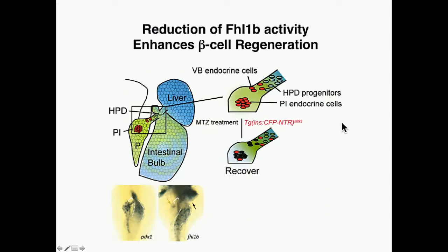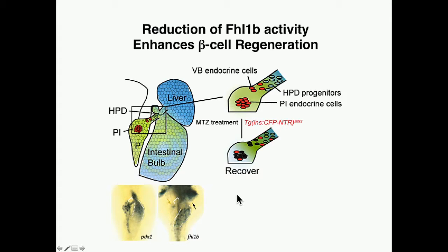The final hypothesis based on our observations is that FHL1B and PDX1 expression have a reciprocal expression pattern. Without FHL1B, there is a dramatic increase in the PDX1 expression domain, and the PDX1-expressing cells in the hepatopancreatic ductal system can convert into beta cells, thereby enhancing beta cell regeneration.